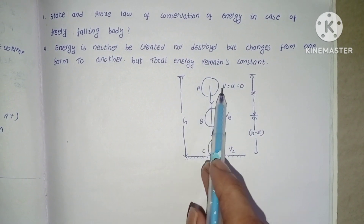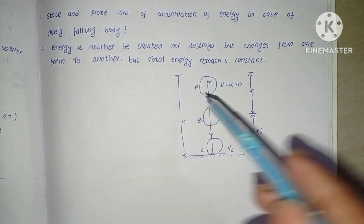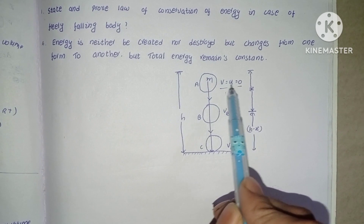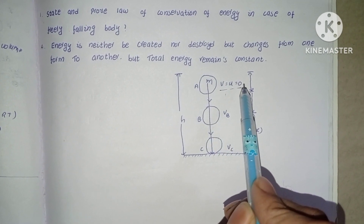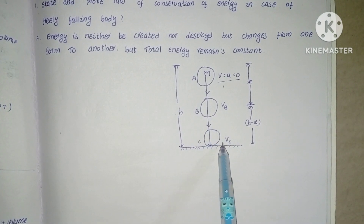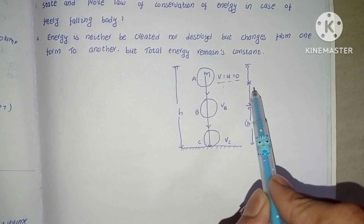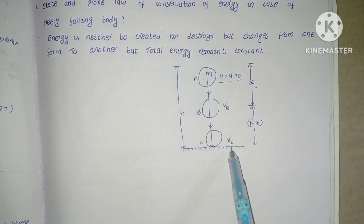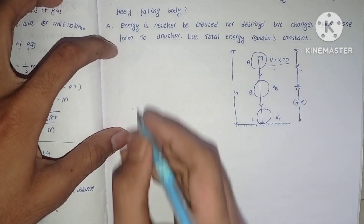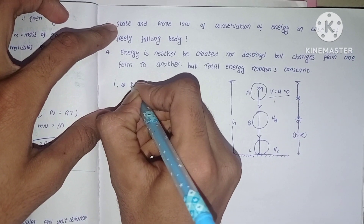Let us take this diagram. This is a body of mass m falling from height H. The starting velocity u is equal to 0. The velocity at point B is V_B, and the final velocity at point C is V_C. The distance from A to B is X, and the distance from B to C is H minus X.